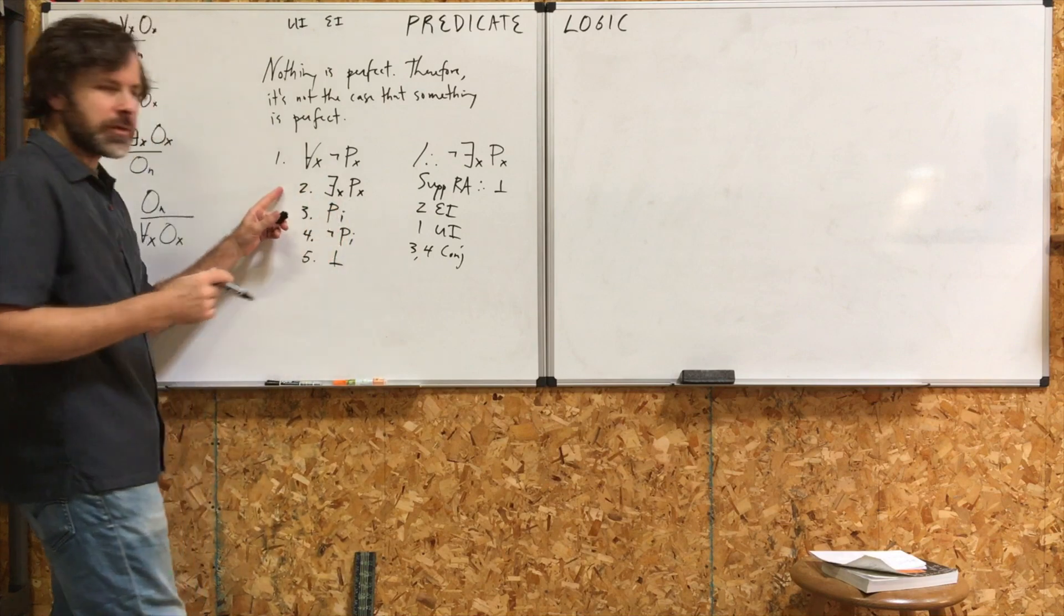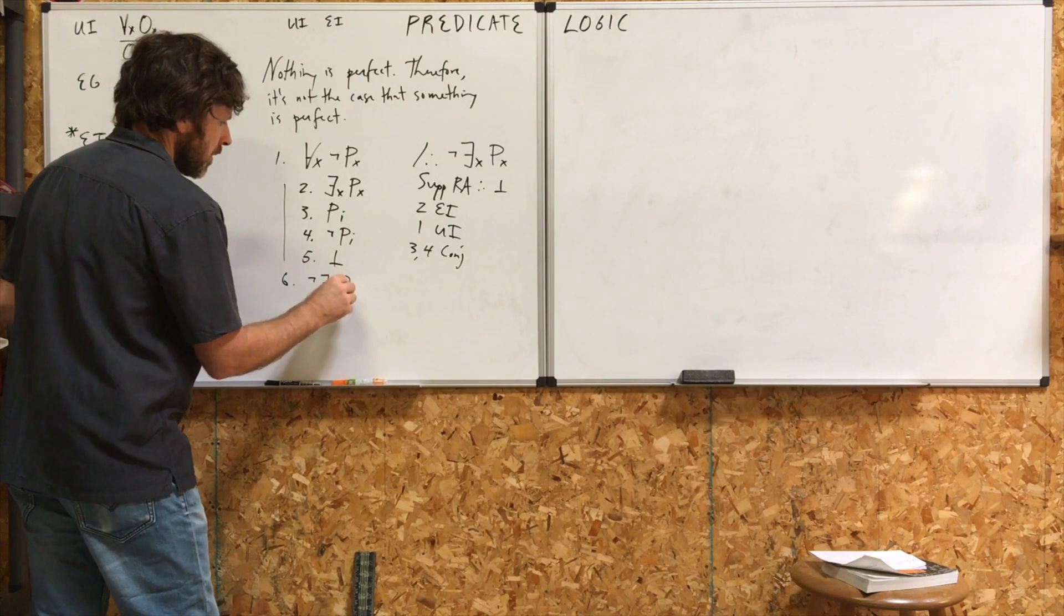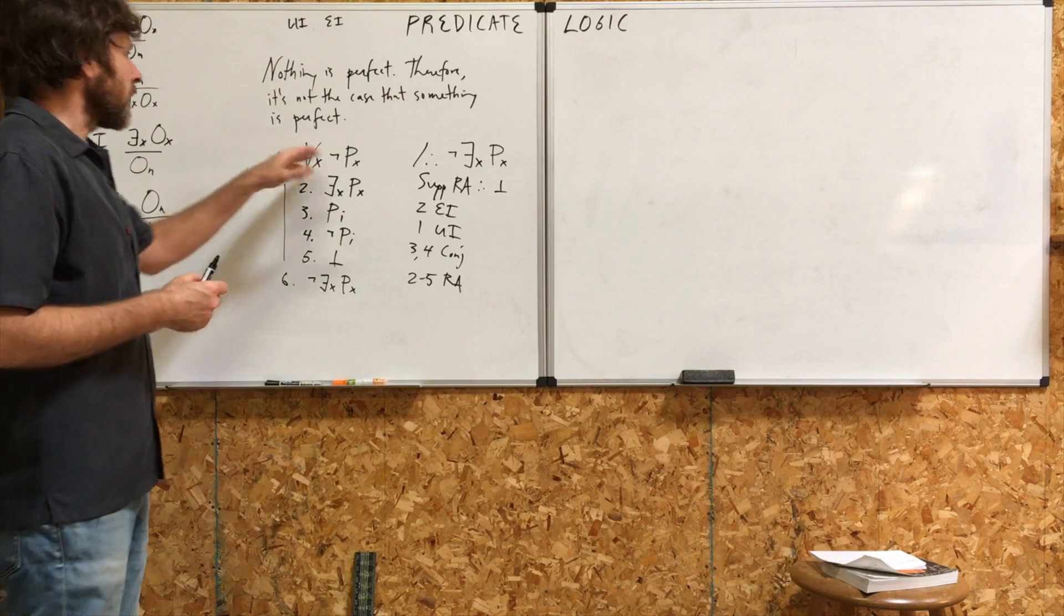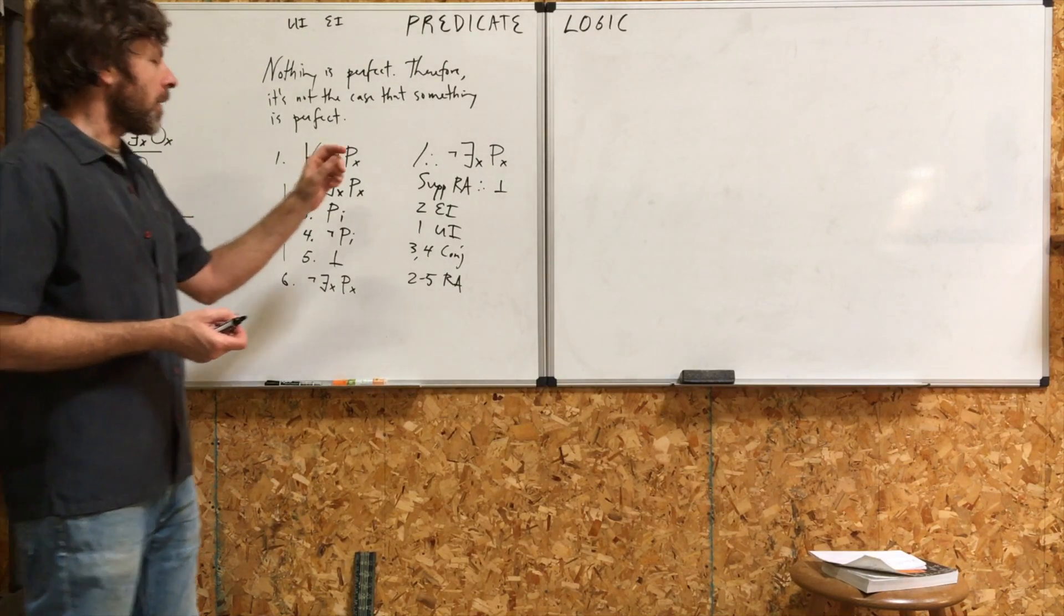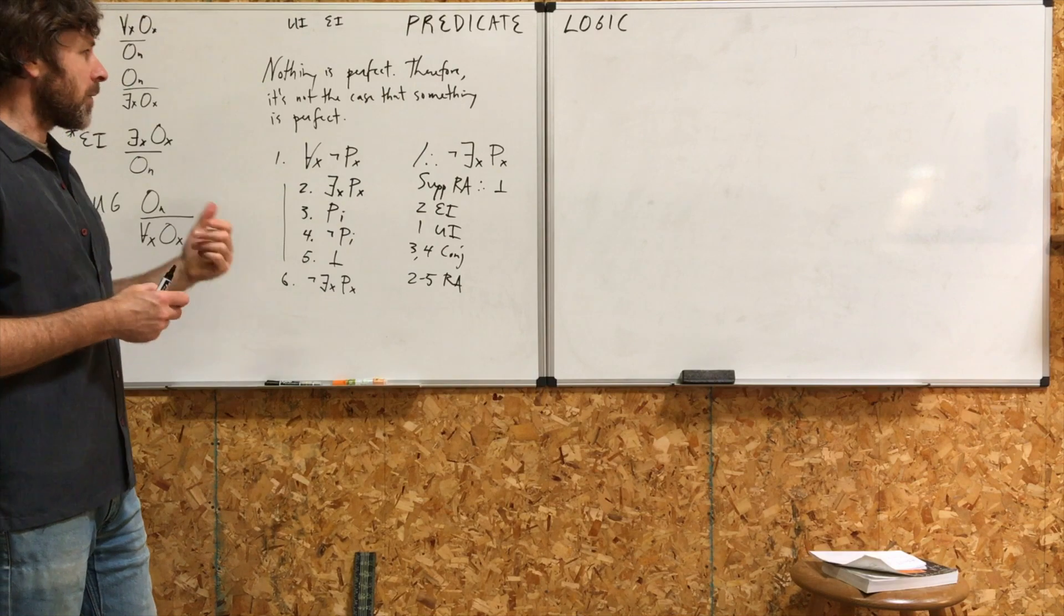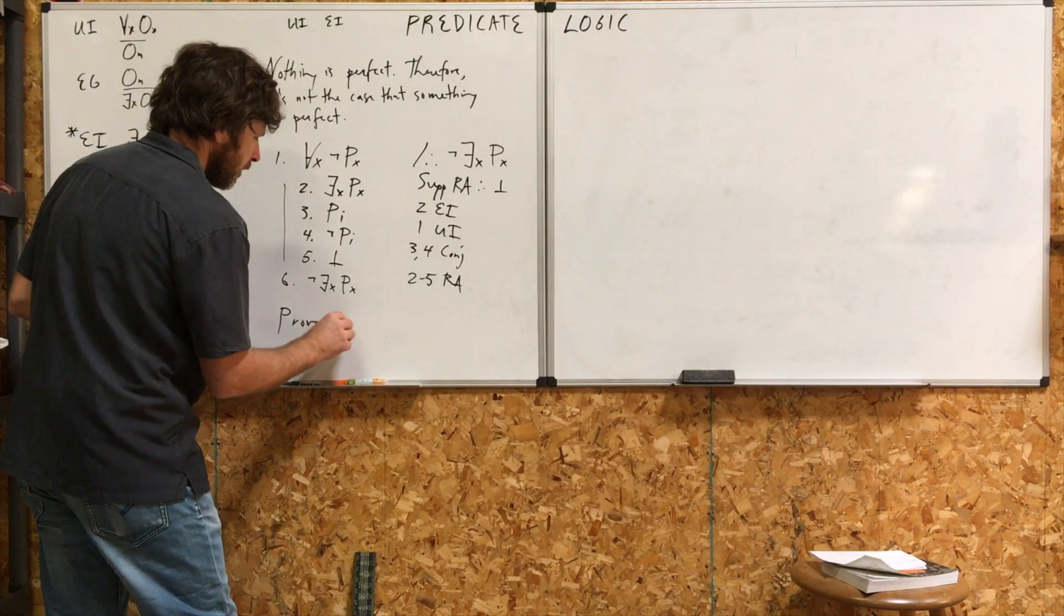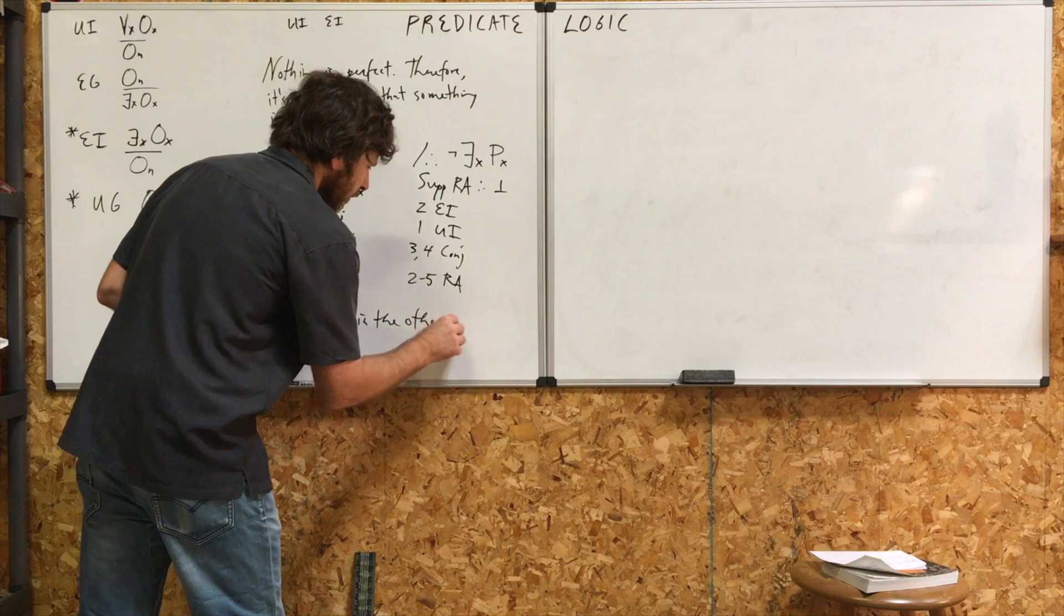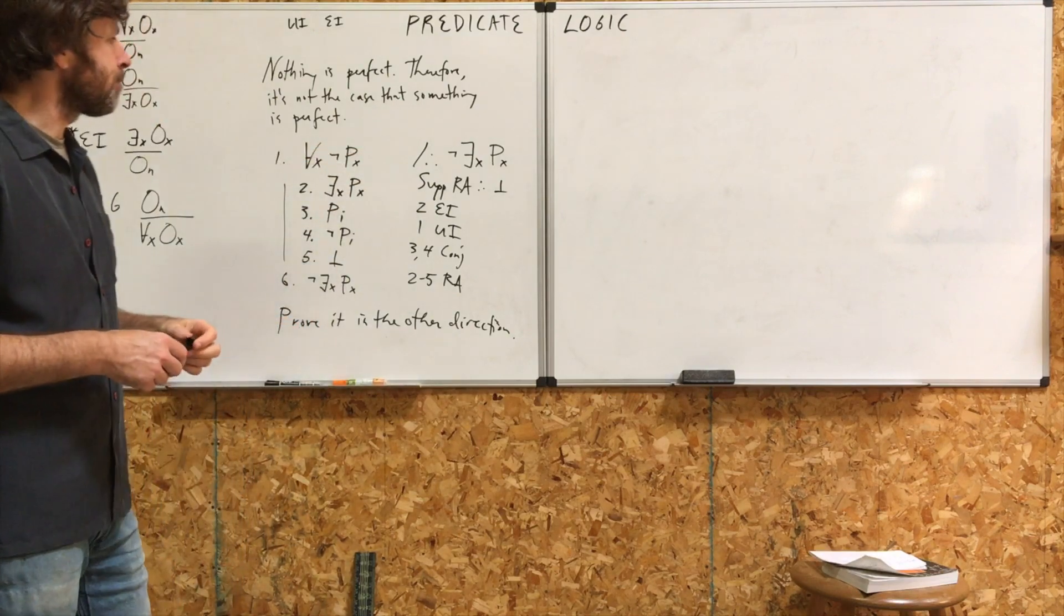Since our supposition on line two led to a contradiction, therefore, we can conclude that our supposition is false. Two through five RA. Nothing is perfect, therefore, it's not the case that something is perfect. And you probably can see right here that it also goes the other direction. These two statements are actually logically equivalent. And you can, for practice, prove it in the other direction. Prove the converse. And by doing so, you will prove that these two statements are logically equivalent.